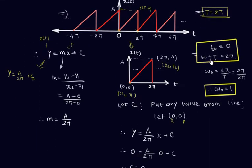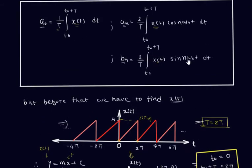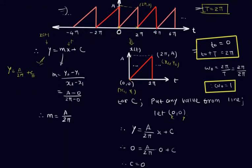The third task is to find ω0. The fundamental frequency ω0 is given by 2π/T. Since T = 2π, we get ω0 = 2π/2π = 1. So ω0 = 1.